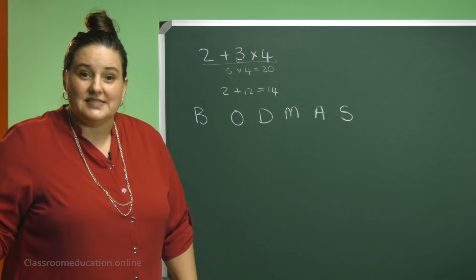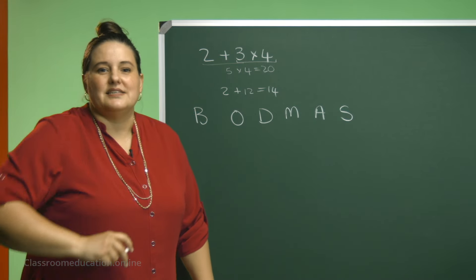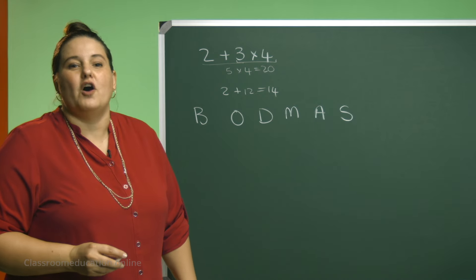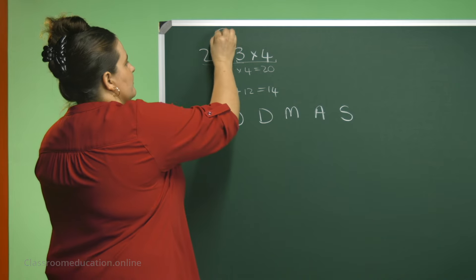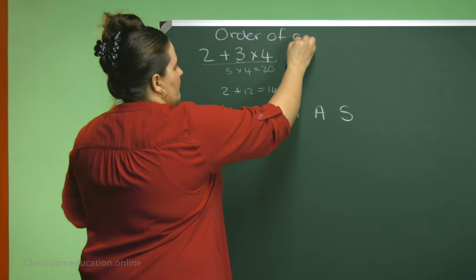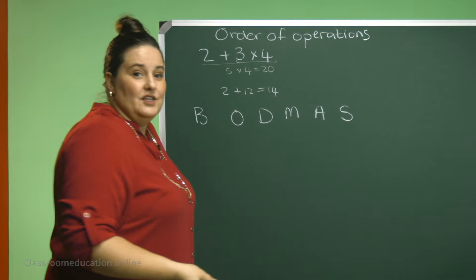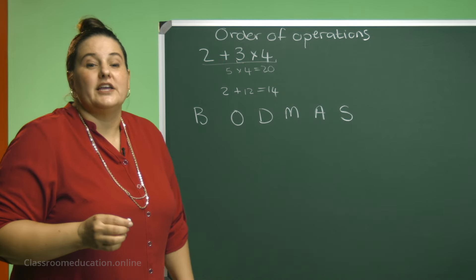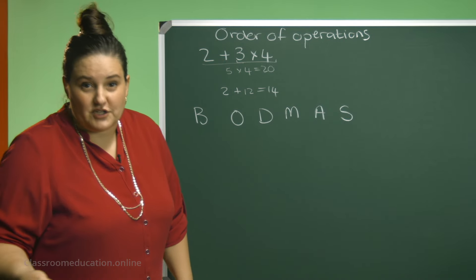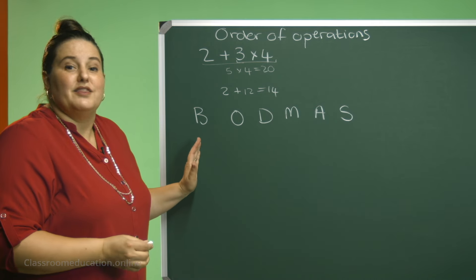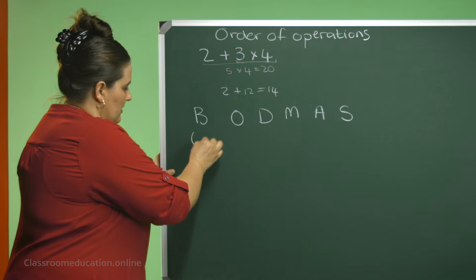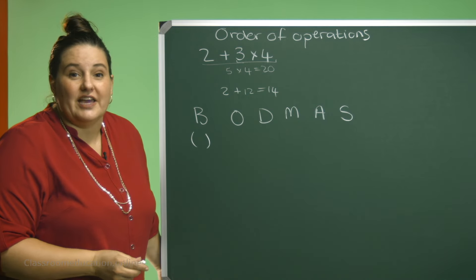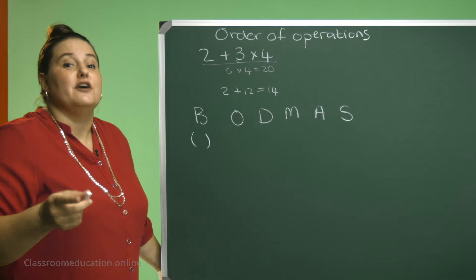But what does BODMAS stand for? BODMAS is actually the order of operations in which we should do a calculation. So in this lesson, we are going to have a look at the order of operations. The first one, the B. The B stands for brackets. So if you have a calculation, you need to do the brackets first.